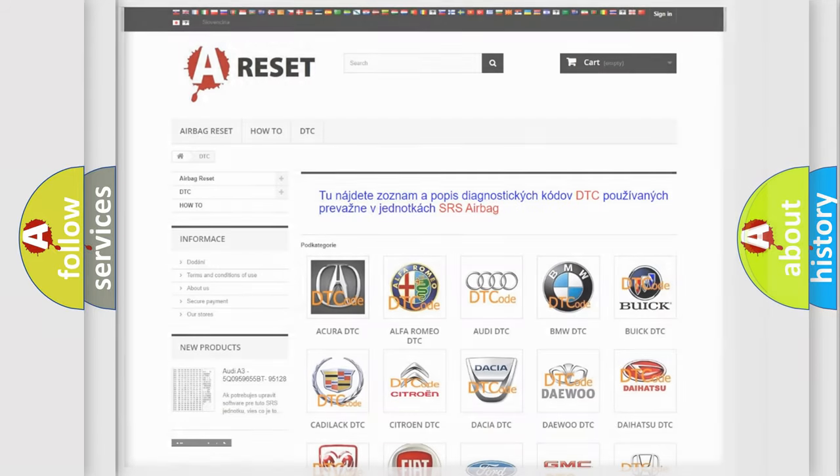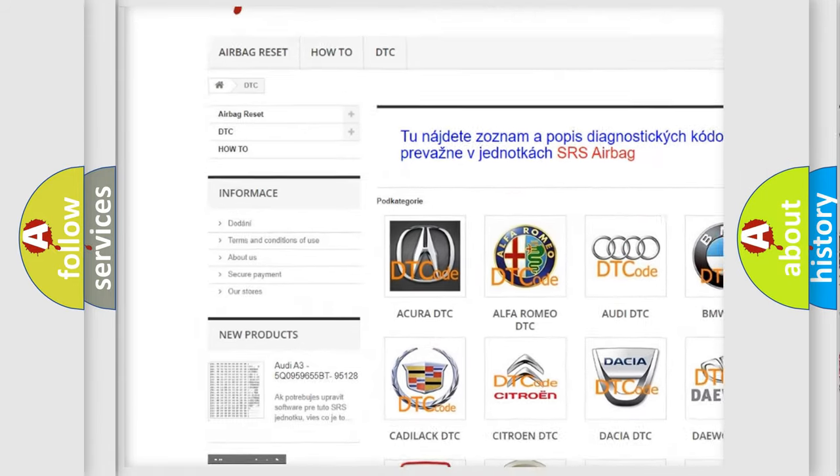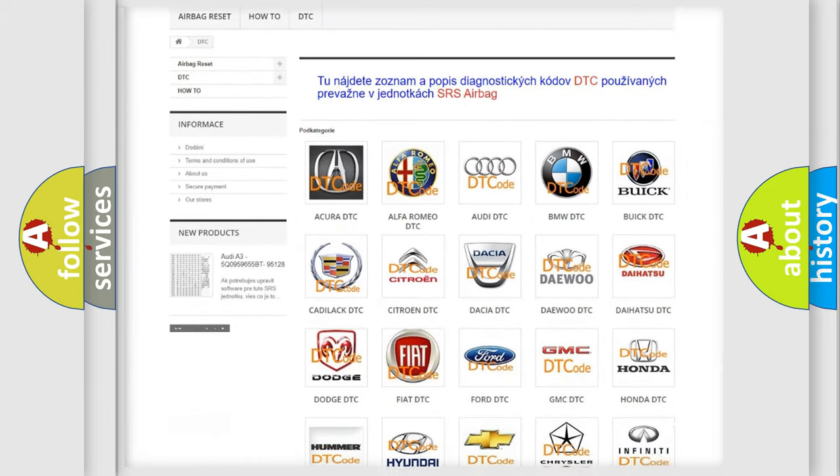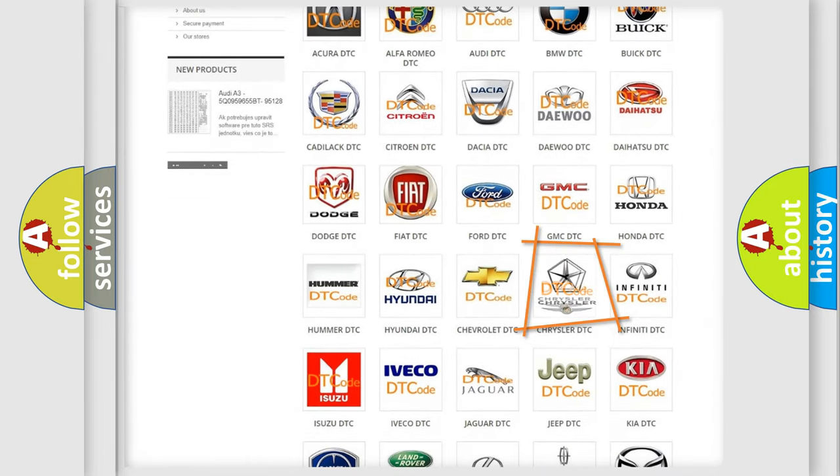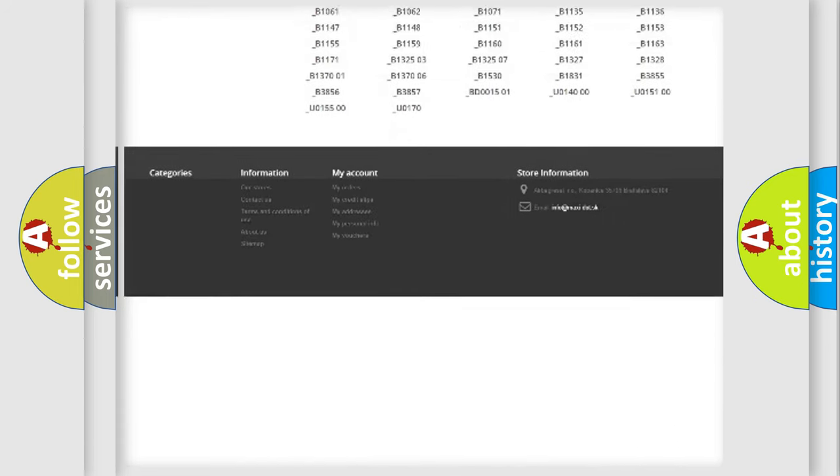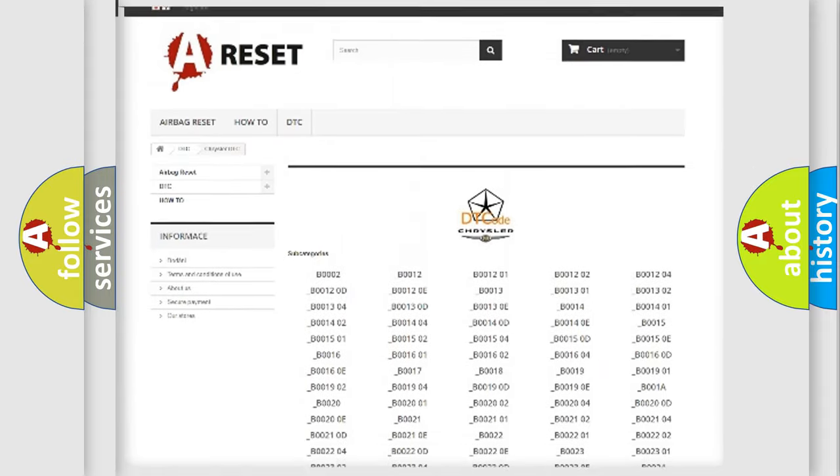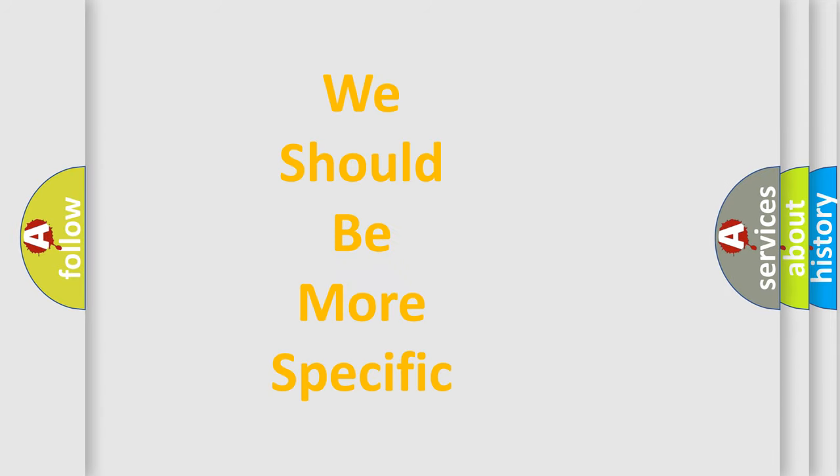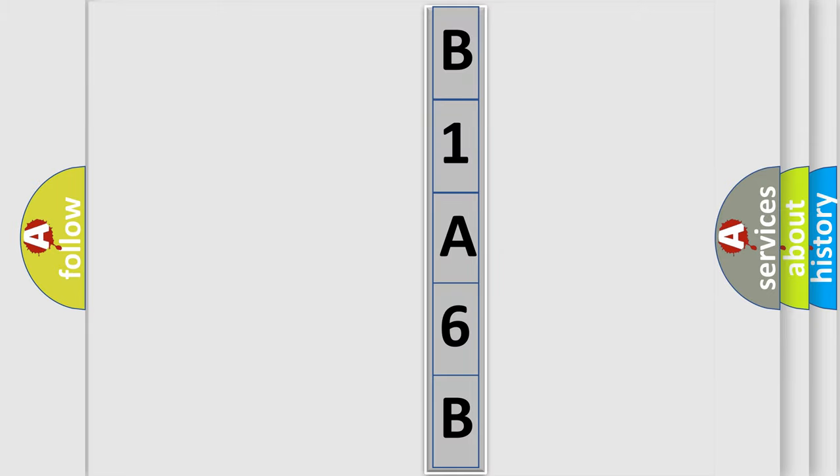Our website airbagreset.sk produces useful videos for you. You do not have to go through the OBD2 protocol anymore to know how to troubleshoot any car breakdown. You will find all the diagnostic codes that can be diagnosed in Chrysler vehicles. Also many other useful things. The following demonstration will help you look into the world of software for car control units.